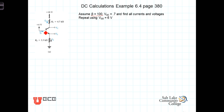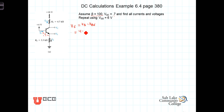We know the base voltage is 4 volts. The emitter voltage is 0.7 volts less because V_BE is 0.7 volts. So V_E equals V_B minus V_BE, which is 4 minus 0.7, giving us V_E equal to 3.3 volts.